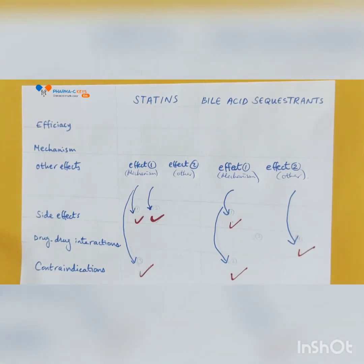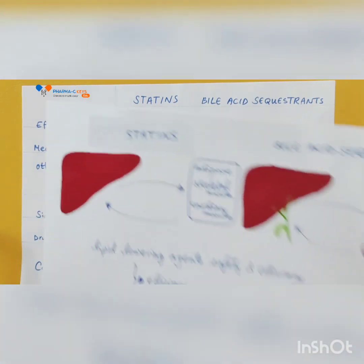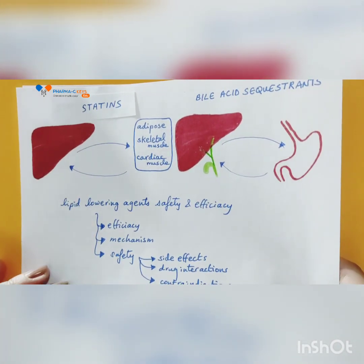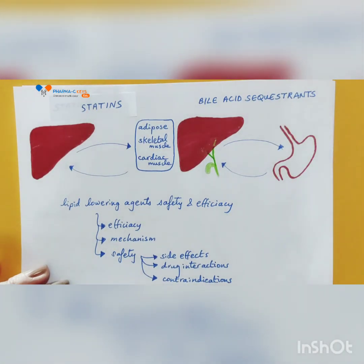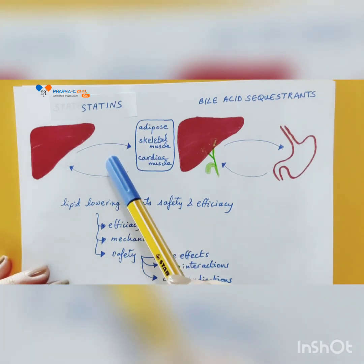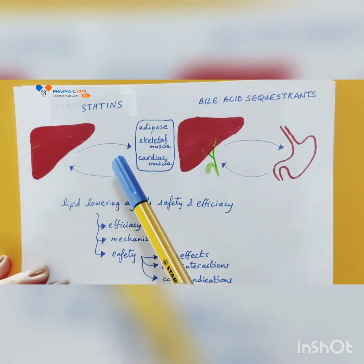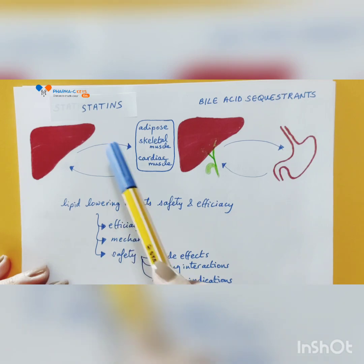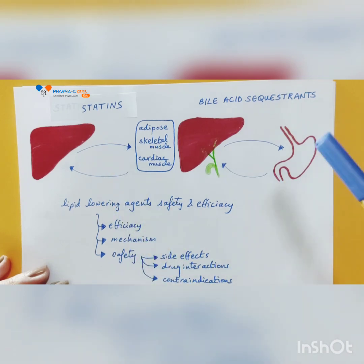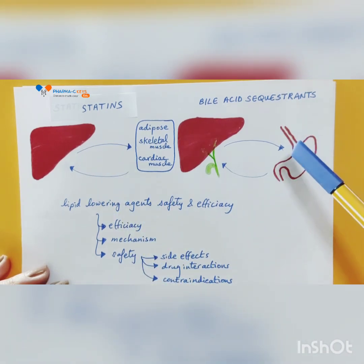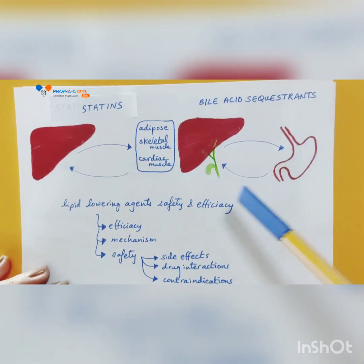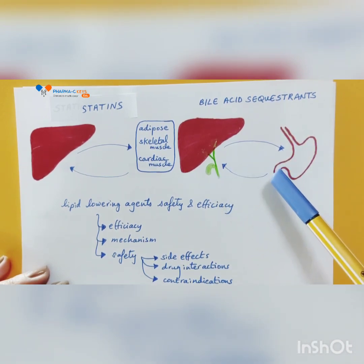In this video, we will discuss two classes of drugs which act to lower cholesterol. Statins will be an example of lipid-lowering therapy which acts on endogenous lipid metabolism, while bile acid sequestrants will also be an example of cholesterol lipid-lowering therapy but acts on exogenous lipid metabolism.